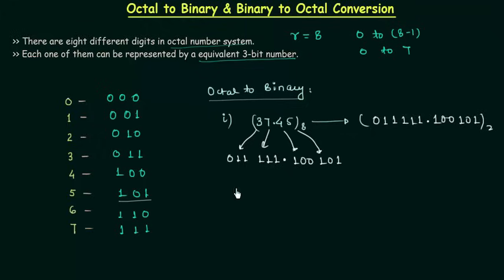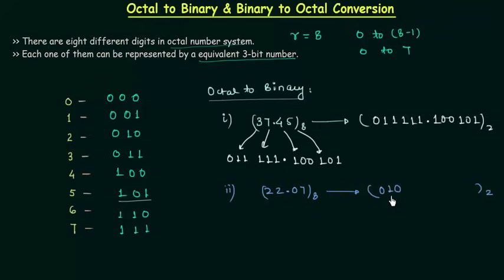We will see one more example. The octal number is 22.07, and we want the binary equivalent. 2 is written as 010, and the second 2 is also 010. Then we have the point. 0 is written as 000 and 7 is written as 111. So the binary equivalent of 22.07 octal is 010010.000111.